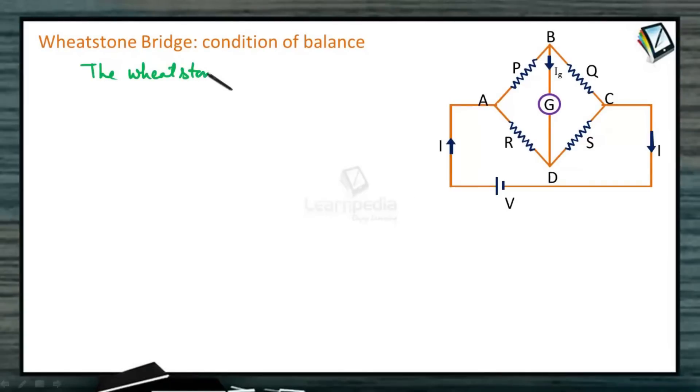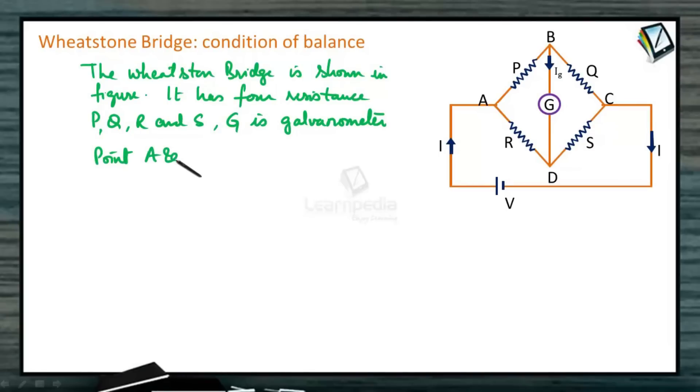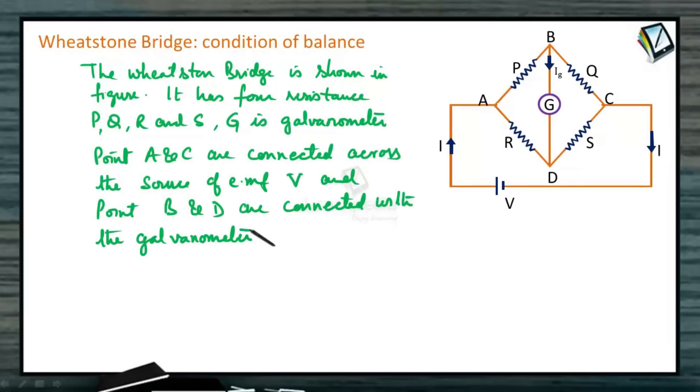The Wheatstone Bridge is shown in the figure. It has four resistances P, Q, R, and S. G is galvanometer. Point A and C are connected across the source of EMF V, and point B and D are connected with the galvanometer with resistance G as shown in this figure. Current I starts flowing in the network and the current will subdivide.